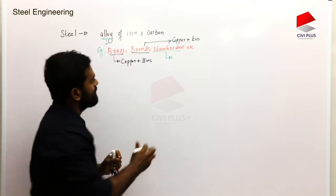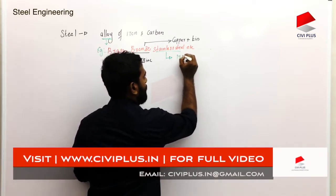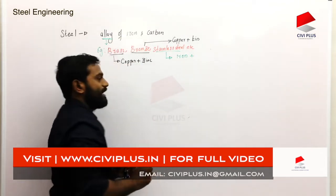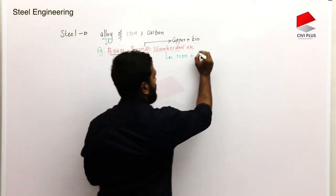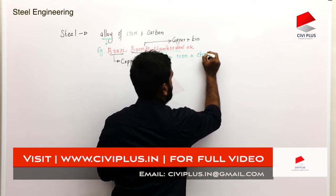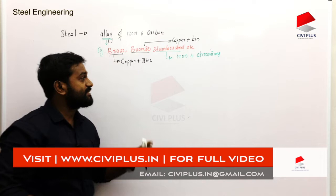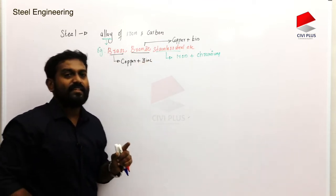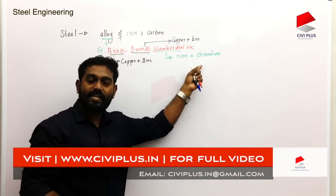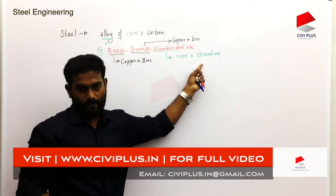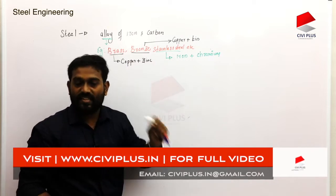Stainless steel is iron and chromium. This stainless steel is called corrosion-resistant. If we add chromium, we add chromium and chromium. If we add chromium, stainless steel is not the same.